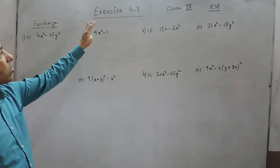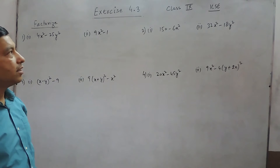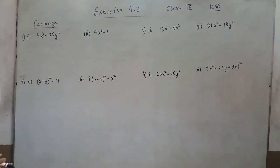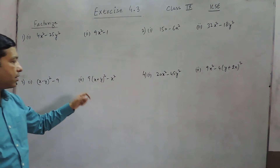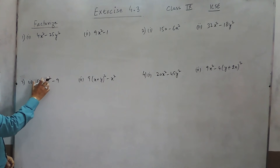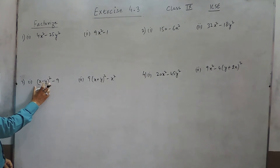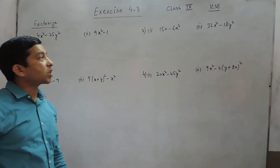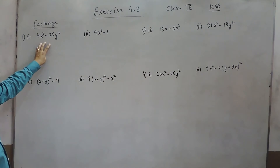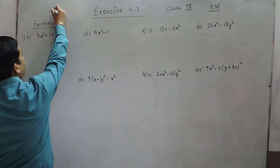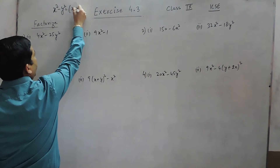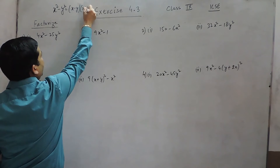Hello everyone. Today we are solving exercise 4.3 of class 9 where we have to solve questions on factorization. We already know that there are two terms. Here x minus y whole square can be taken as one term, so these are two terms and both of them are perfect squares. If they are perfect squares then there is only one formula: x square minus y square is equal to x minus y multiplied by x plus y.